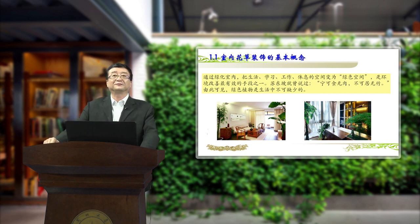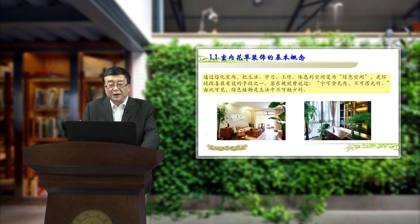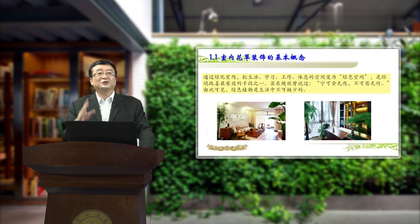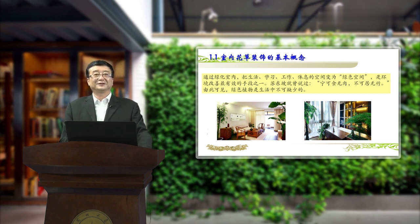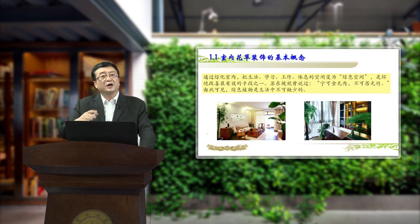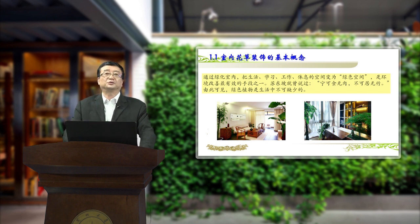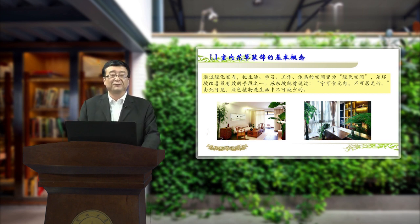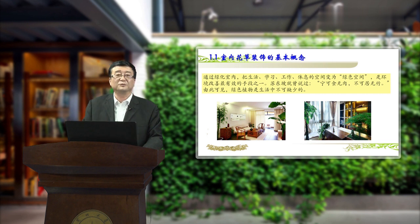那么这种情况下怎么办呢？我们可以通过绿化室内，把生活、学习、工作、休息的空间变成绿色空间，这才是环境改善最有效的手段之一。苏东坡就曾经说过：宁可食无肉，不可居无竹。由此可见，绿色植物是生活中不可缺少的。